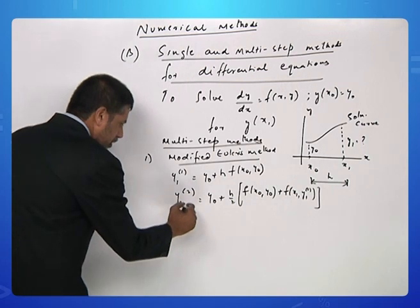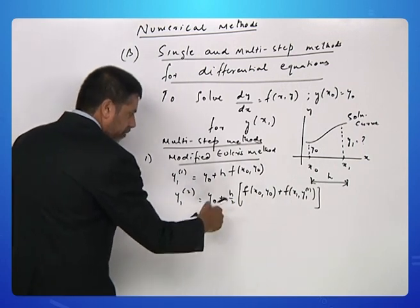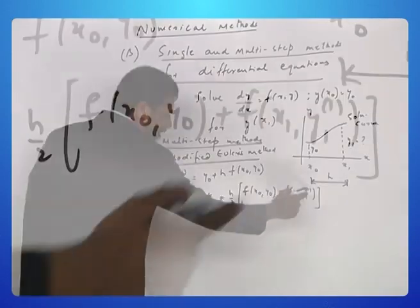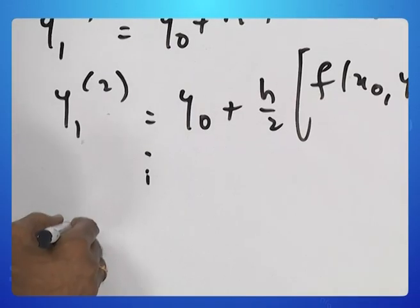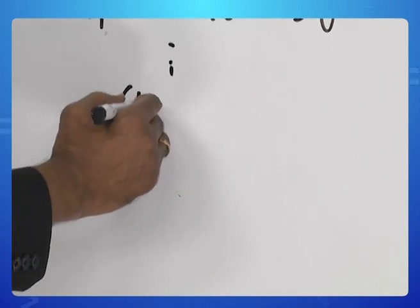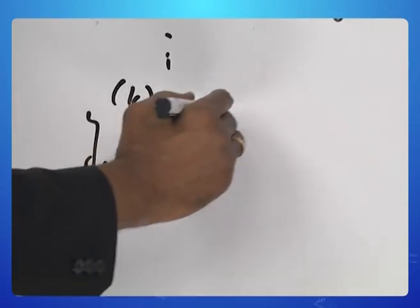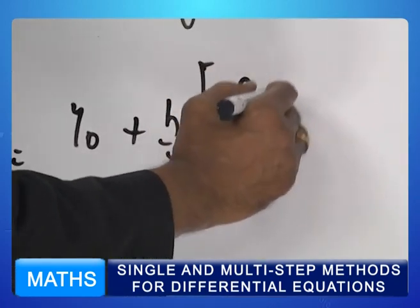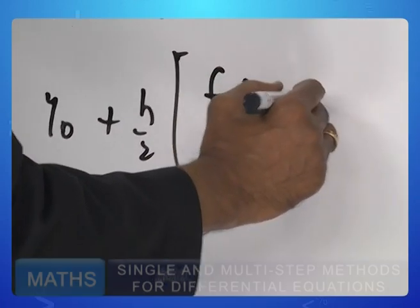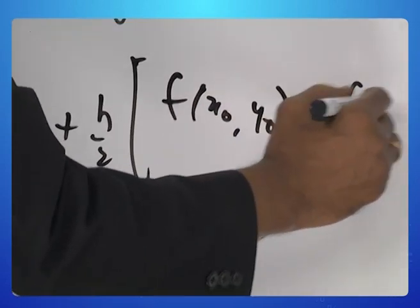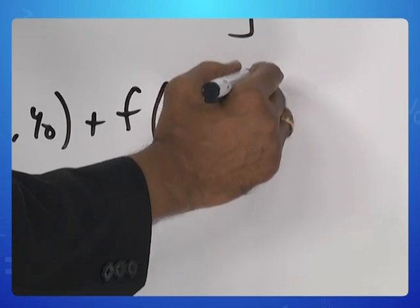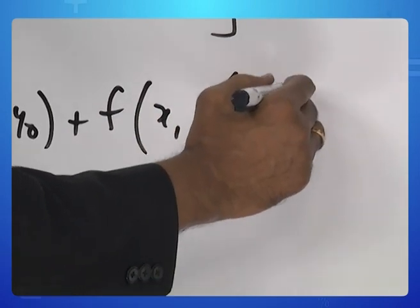If you go to the next step everything is intact but here you will have f of x1 comma y1 second approximation. The general rule is y1 kth approximation equals y naught plus h by 2 into f of x naught y naught plus f of x1 y1 k minus 1 approximation.